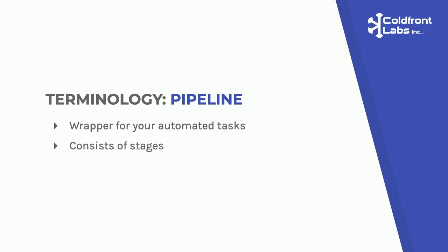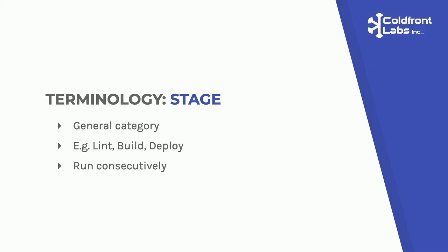A pipeline is the wrapper term for your jobs — it basically contains all your series of automated tasks that you run on your code, and it contains multiple stages. A stage is a category within your pipeline. You may have a lint stage, a build stage, or a deploy stage. The order in which you declare the stages is the order in which they run. They run consecutively — one stage must complete before the next can begin. So the lint stage must finish before the build stage begins. An important thing to know is that stages define the general order of your pipeline, but they don't actually execute anything. That's what jobs are for.